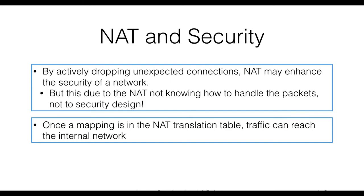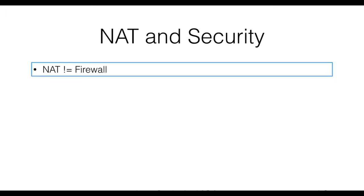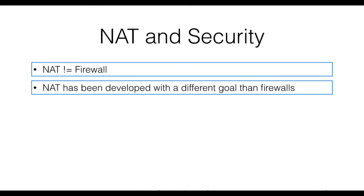Also, once a mapping is in the NAT translation table, traffic is allowed into the network. The underlying assumption is that this traffic is okay because an internal host first initiated an exchange, but this might not be the case. This in practice creates a hole in the perimeter. It is important to stress that a NAT is not a firewall. Although incidentally both create a checkpoint for traffic entering and leaving the internal network, their main functionality is different. While a firewall will inspect packets to implement access control, NAT will only map internal and external IPs and ports. The goals of NAT and firewalls are therefore inherently different.